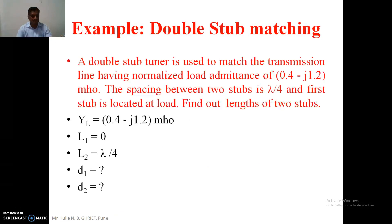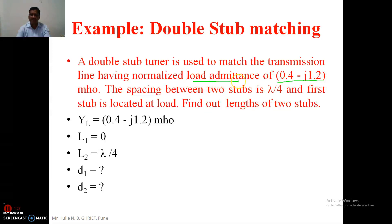Now I will start with an actual example. The transmission line is terminated by a load admittance — I have taken load admittance directly to avoid conversion. The value is 0.4 - j1.2, and the spacing between the two stubs is λ/4. The first stub is located at the load itself.